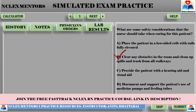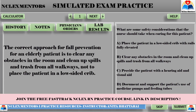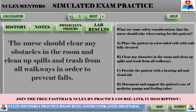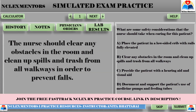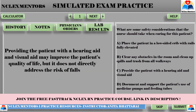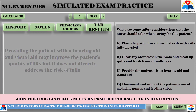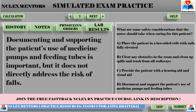The correct answer is B. The correct approach for fall prevention for an elderly patient is to clear any obstacles in the room and clean up spills and trash from all walkways, not to place the patient in a low-sided crib. This option is correct — the nurse should clear any obstacles and clean up spills to prevent falls. Providing a hearing aid and visual aid may improve quality of life, but does not directly address the risk of falls. Documenting and supporting medicine pumps and feeding tubes is important, but does not directly address fall risk.